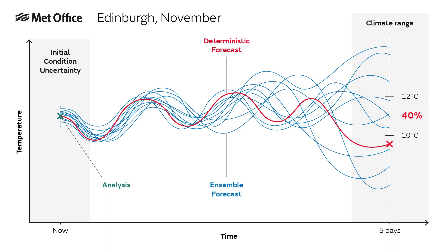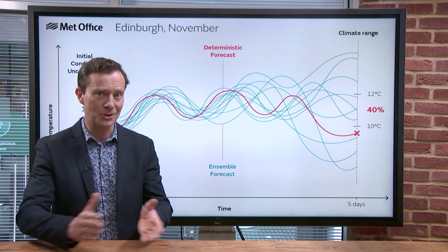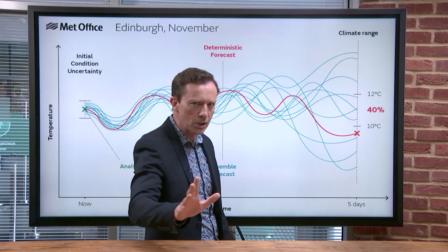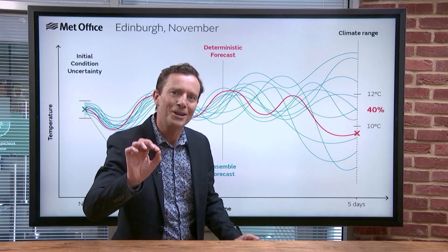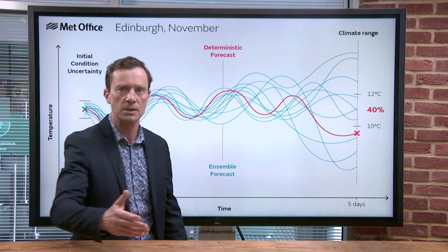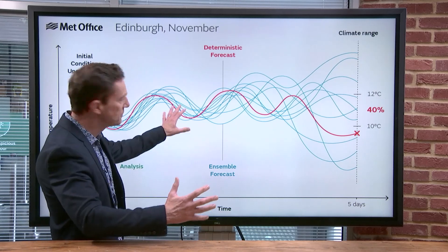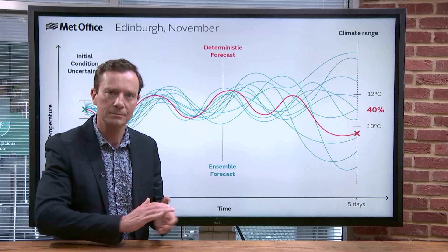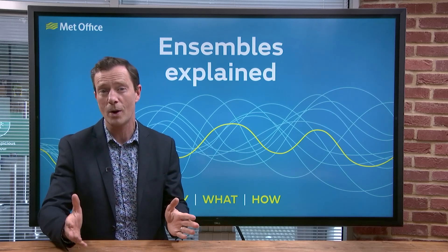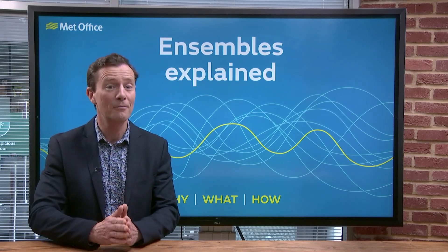Let's go back to the Edinburgh temperature example. If you have 100 members, that's 100 different possible future atmospheres — 100 answers to the question: what will the maximum temperature be in Edinburgh in five days' time? Let's say 40 of them are saying between 10 and 12°C. You can now state that the chance of the maximum temperature in Edinburgh in five days' time being between 10 and 12°C is 40 in 100, which is 40%. So you can turn that multiverse of different possible futures into a number. Is that useful? Having a percentage chance of something happening — as we'll see, the answer is very much yes.